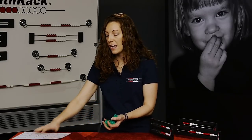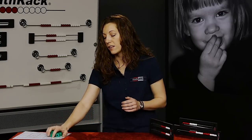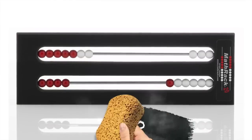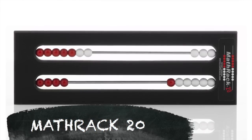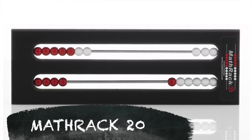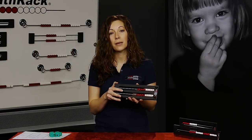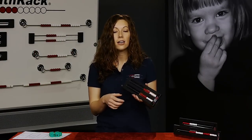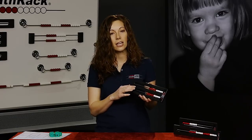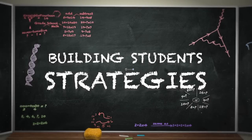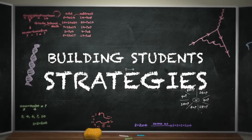So instead, what I've started using in a lot of the classrooms is what's called a MathRack 20. This takes those cubes in the form of these beads now and has them all in one nice container for us. And it has up to 20 because it was designed to help kids get more advanced strategies when they're doing addition and subtraction facts. So we're going to spend a few minutes here taking a look at how we can build students' strategies for addition using this.